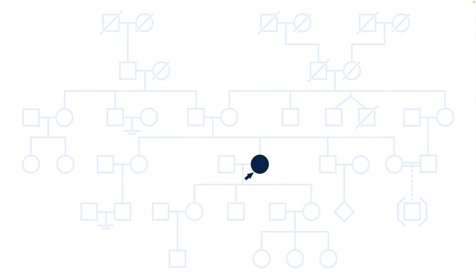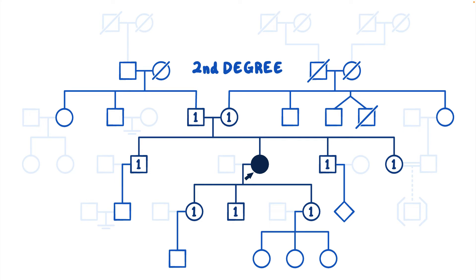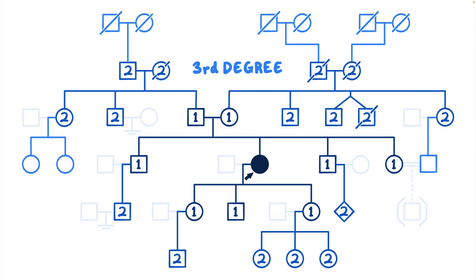In addition to first-degree relatives — parents, siblings, children — a pedigree should also include second-degree relatives: half-siblings, aunts or uncles, nieces, nephews, grandparents, and grandchildren, and third-degree relatives: great-grandparents or great-grandchildren, and first cousins.